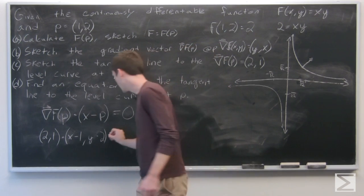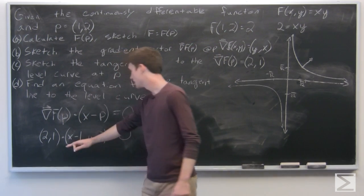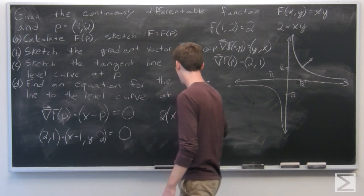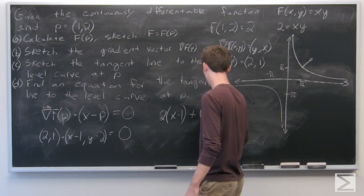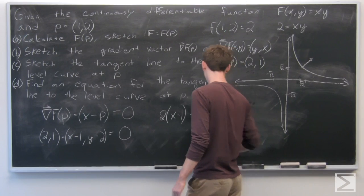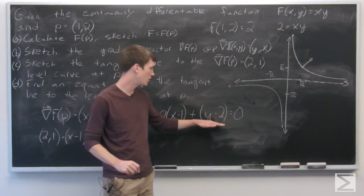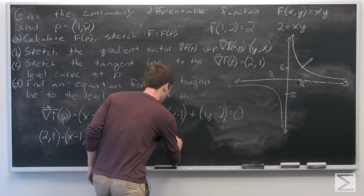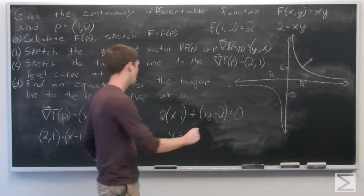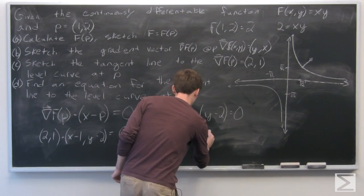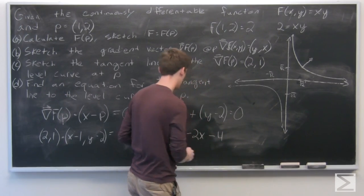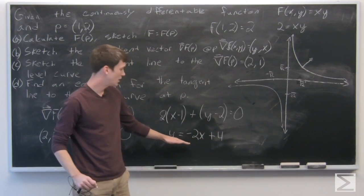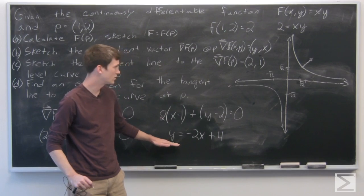So our tangent line is going to be 2 times (x-1) plus (y-2). And we could get this in y equals form. So y is equal to -2x + 4. And we see that this is the equation of our tangent line.